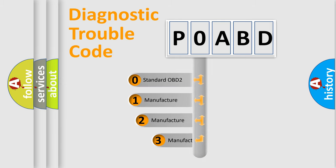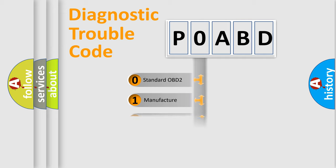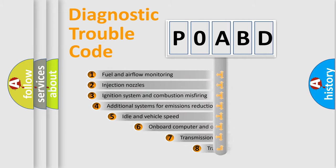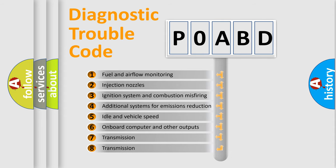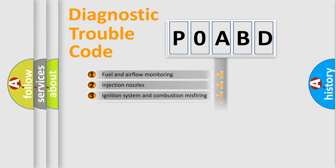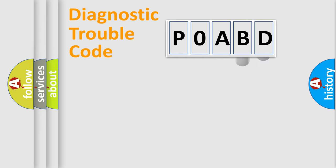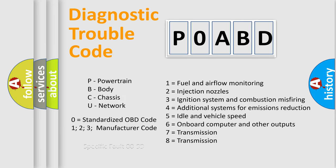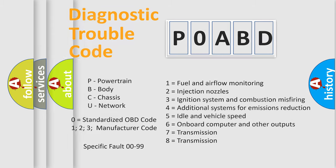If the second character is expressed as zero, it is a standardized error. In the case of numbers 1, 2, or 3, it is a more specific expression of a car-specific error. The third character specifies a subset of errors. This division is valid only for the standardized DTC code, where only the last two characters define the specific fault of the group. Such a division is valid only if the second character is expressed by the number zero.